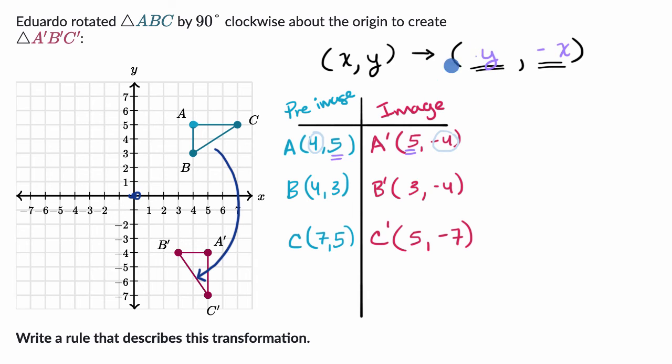So maybe we take the old X in the pre-image, take the negative, and then make that the image's Y. And then what was the Y, we make that into the new X. Let's see if that holds up. So for point B, if we took this four, took the negative of it and made that the new Y, that's exactly what happened there. And then if we take the old Y and just put it in for X, that is exactly what happened there. So this is holding up, and it also holds up with point C right over there.